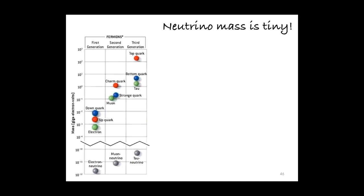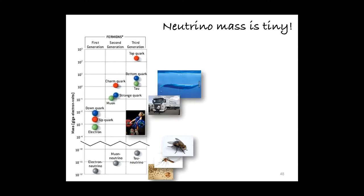Just to put this into perspective: if you imagine that an electron neutrino weighed as much as a fruit fly, the muon neutrino would weigh as much as a mosquito. The tau neutrino would weigh as much as a fly, and the electron would weigh as much as a decently-built human. The up and down quarks and the muon would weigh as much as an EU-sized semi-truck, either empty or fully loaded depending on where you are. And a charm quark would weigh as much as a blue whale.